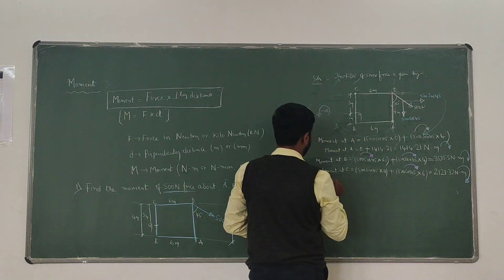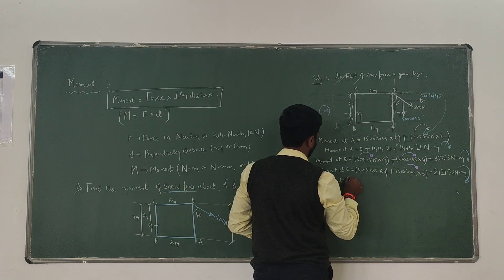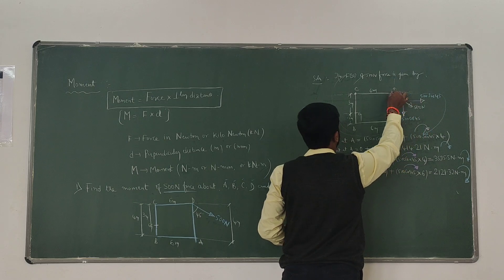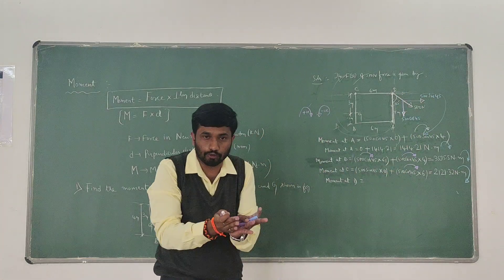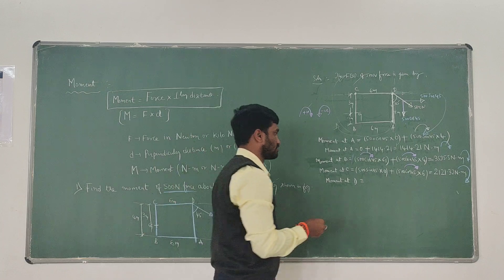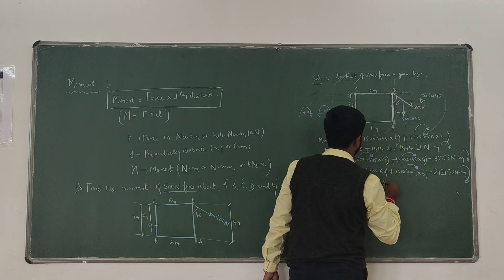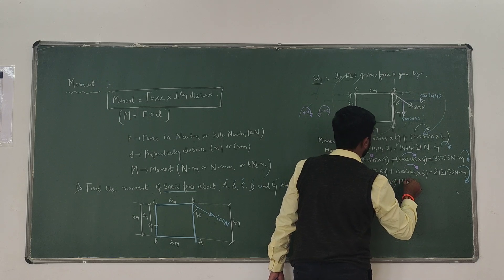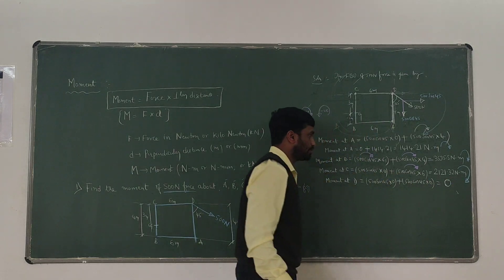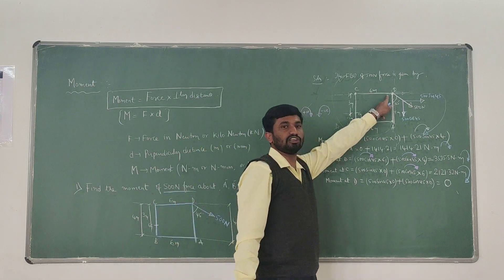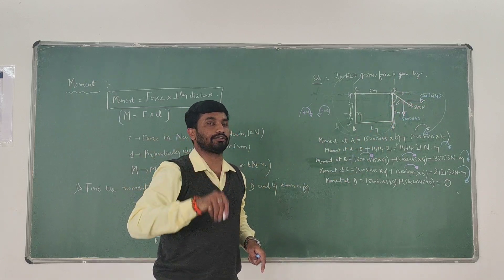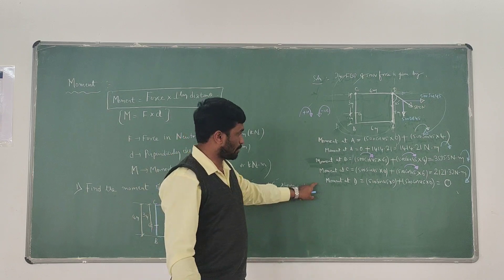Next, the moment at D. Both DA — that is 500 cos 45 — and DC — 500 sin 45 — both forces are acting at the same line of action through point D. Both vertical and horizontal forces are not having any perpendicular distance. Therefore, moment at D equals 0 plus 500 cos 45 into 0, giving a total moment of 0 at point D.